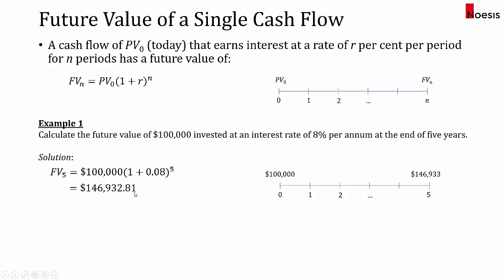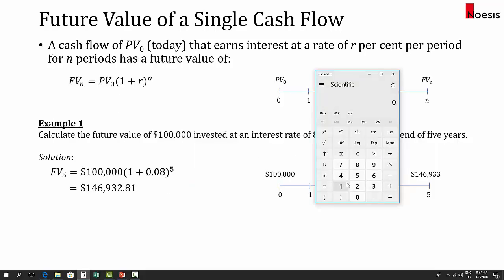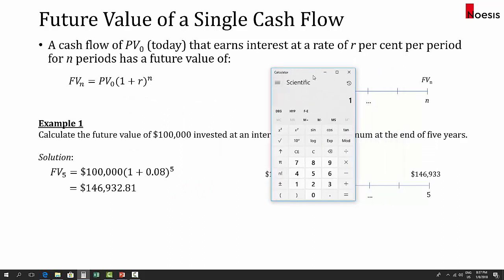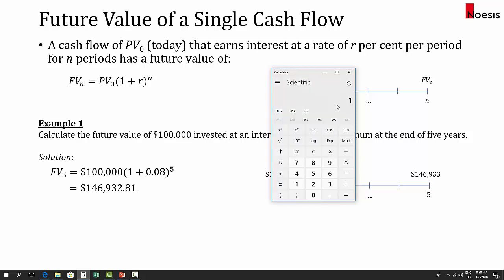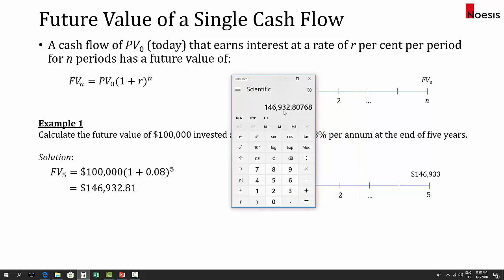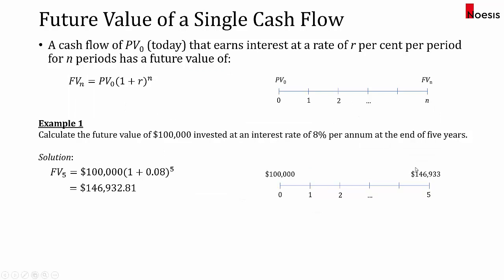To calculate this on your calculator, at a minimum you will need a scientific calculator. Enter 100,000, then multiply by an open bracket, then 1 plus 0.08, close bracket, then press the x-to-the-power-of-y button, then press 5, then equals — and you get the amount we saw earlier: $146,933. That's how much you will get at the end of year 5.